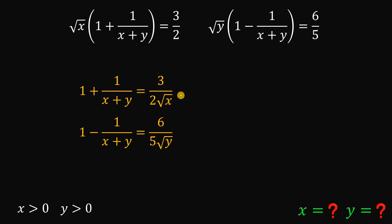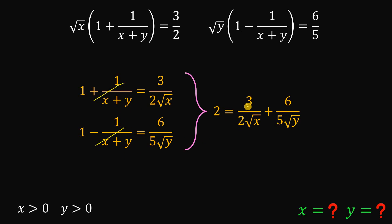Notice that when we add these two results, the positive 1 over (x plus y) and the negative 1 over (x plus y) cancel out. So when we add these two results, we get 2 equals 3 over 2 times square root of x plus 6 over 5 times square root of y. Let's set aside this result.